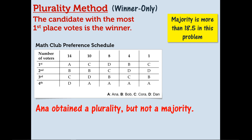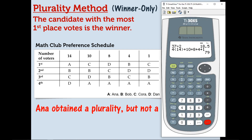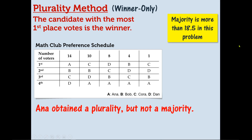In our math club election, majority would be if a candidate received more than 18.5 votes. How did I get 18.5? You have to know how many total voters there are — how many total ballots there are. We can find that by simply adding the total number of values for the piles, which gives us 37. And to get a majority would be more than half, so 37 divided by two is 18.5. Notice that Anna obtained a plurality — we've already established that — but she did not get a majority.